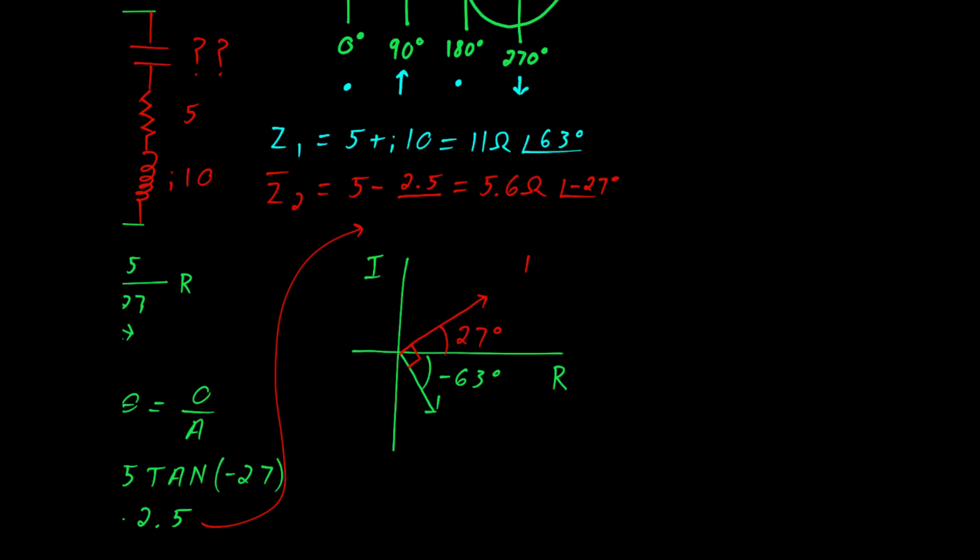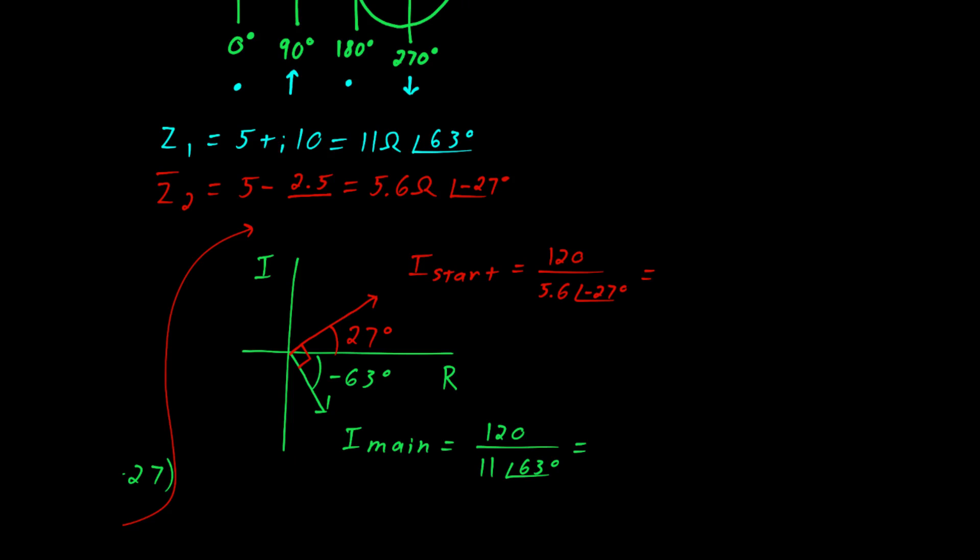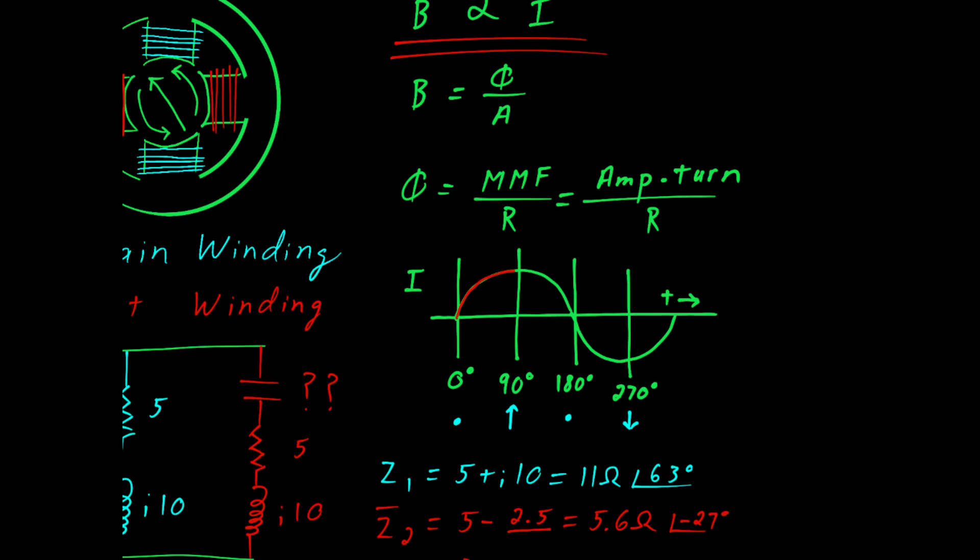We can now compute the current in each branch of the machine. In the main winding we have 11 amps at a phase angle of negative 63 degrees. In the start winding we have 21 amps at an angle of 27 degrees. To our original time domain plot we can add the current for the start winding and for the main winding. My apologies folks I got the colors backwards here. But you can see they are offset from each other by 90 electrical degrees with the start winding having a greater amplitude.